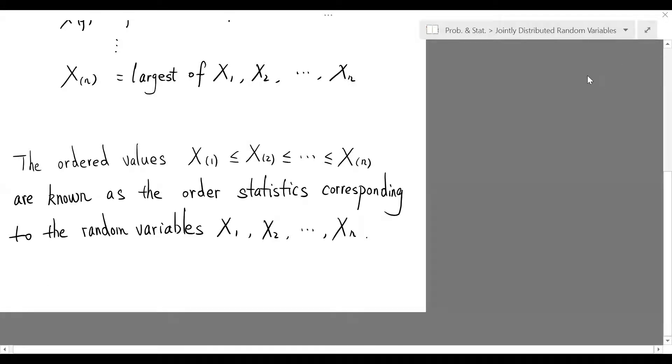In other words, the order statistics are just obtained by ordering the random variables X sub 1 to X sub n from small to large.